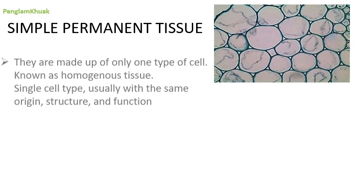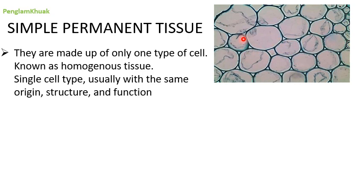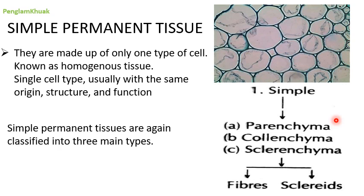Simple permanent tissue is made up of only one type of cell. They are known as homogeneous tissue because the composition, shape, and size are mostly similar. Cells of the same origin have the same structure and perform the same function. Simple permanent tissue is classified into three main types: parenchyma, colenchyma, and sclerenchyma, with sclerenchyma further divided into fibers and sclerids.